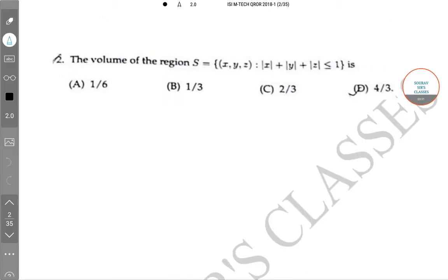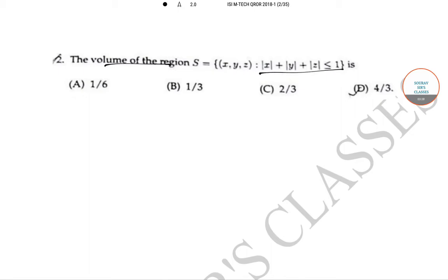The next question is: find the volume of the region |x| + |y| + |z| ≤ 1. Let us plot the axes x, y, and z.